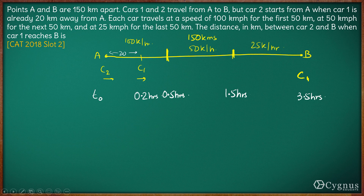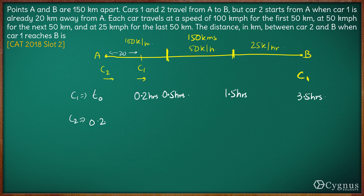Where will Car 2 be after 3.5 hours? For the first 0.2 hours, Car 2 is not traveling. Car 2 starts at 0.2 hours. To travel the first 50 kilometers at 100 kilometers per hour takes 0.5 hours, so Car 2 reaches the 50 kilometer mark at 0.7 hours. To travel the next 50 kilometers at 50 kilometers per hour takes 1 hour, so Car 2 reaches the 100 kilometer mark at 1.7 hours.